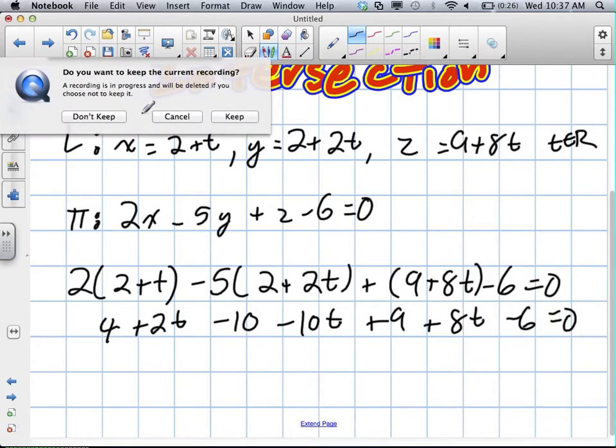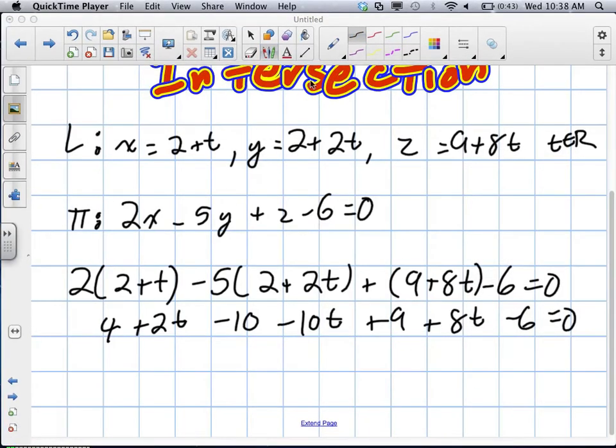Oh, shoot. When we go to carry this out, we end up with our like terms. We're going to collect them here. So, we have 2t minus 10t gives us negative 8t plus 8t gives us 0t.